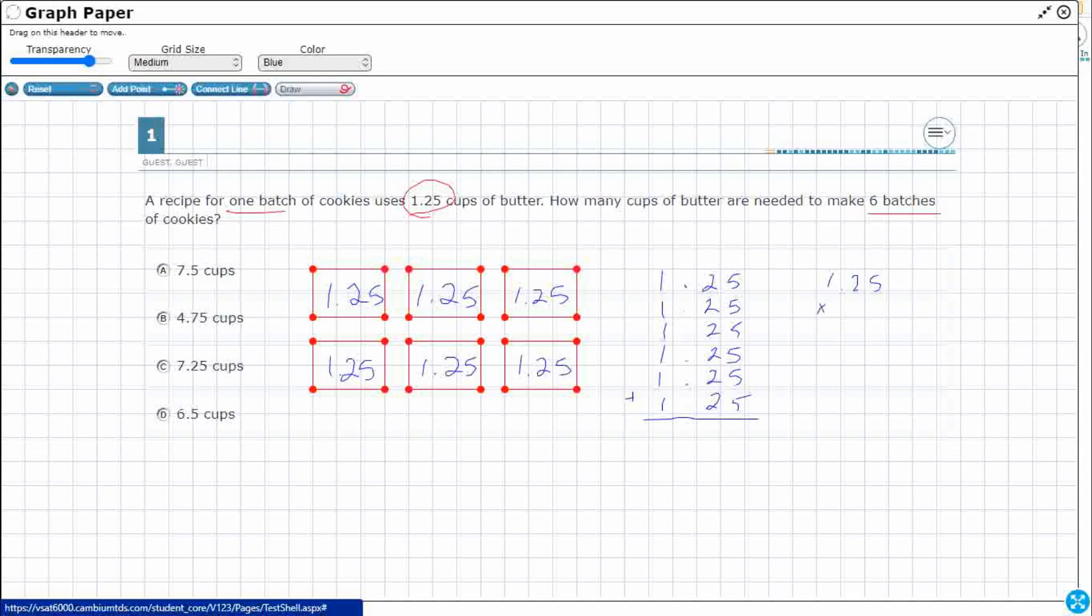Now you notice that when I did that 1.25 I didn't really leave a spot for the decimal because the decimal is not as important when you multiply. So let's just see what happens when we add. So I've got 5, 10, 15, 20, 25, 30.